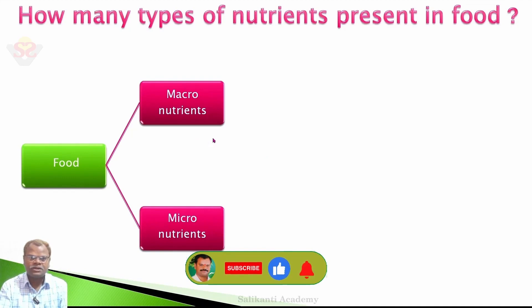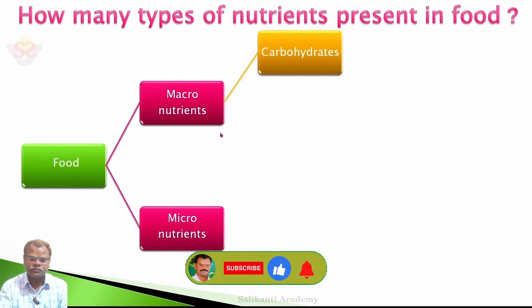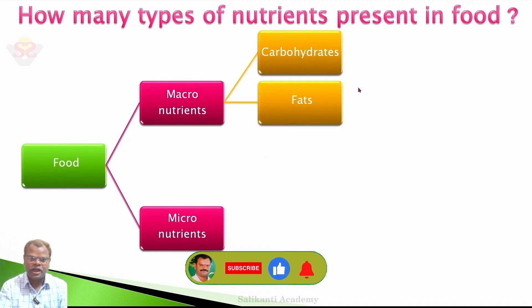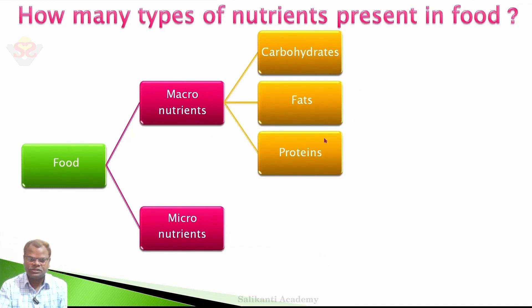In macronutrients, there are three major nutrients. One, carbohydrates. Second, fats. Third, proteins.